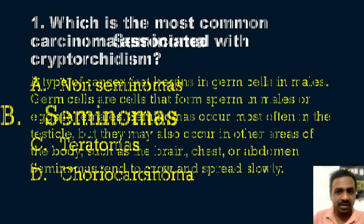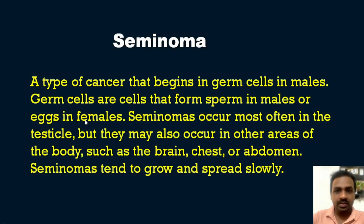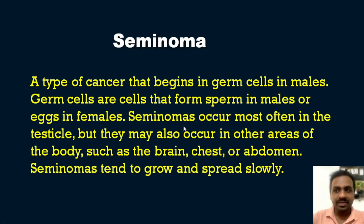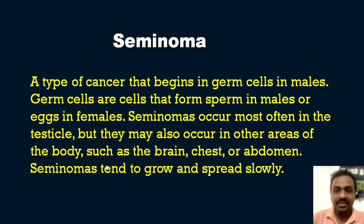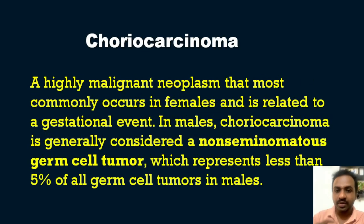A seminoma is a type of cancer that begins in germ cells in males. Germ cells form the sperm in males or eggs in females. Seminomas occur most often in the testicle but may also occur in other areas such as the brain, chest, or abdomen. Seminomas tend to grow and spread slowly and are the most commonly occurring carcinoma related to undescended testis or cryptorchidism.